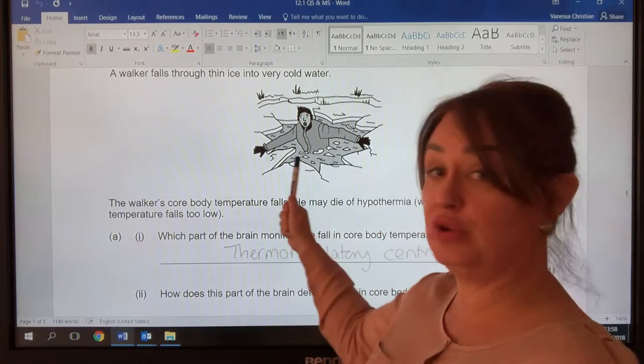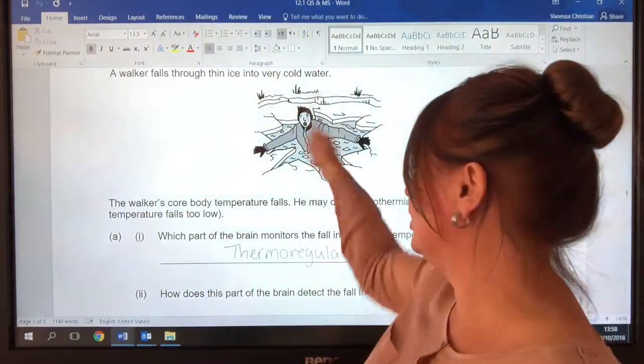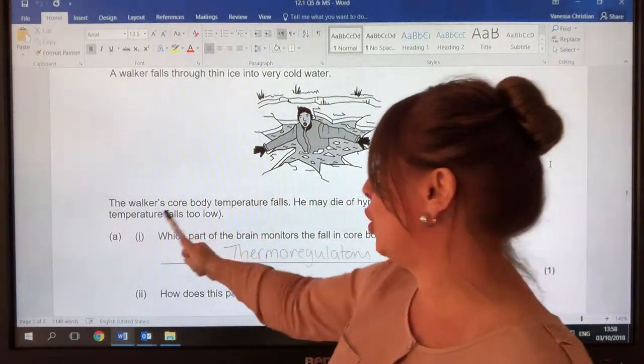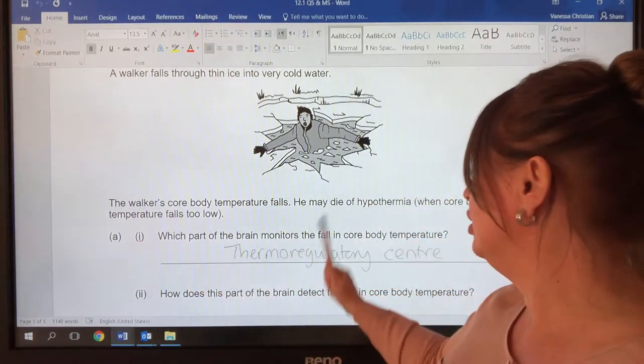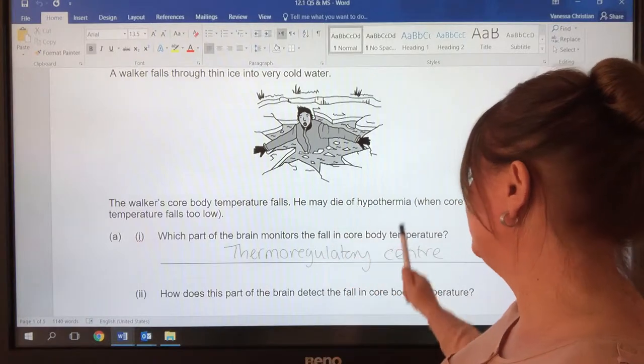So we've got somebody who's fallen through the ice into very cold water, their core body temperature has fallen, and the question asks which part of the brain monitors the fall in core body temperature.